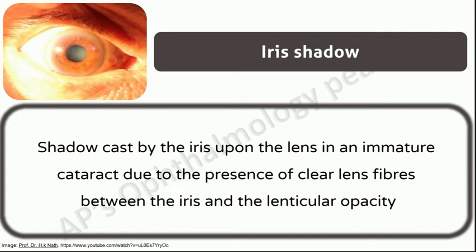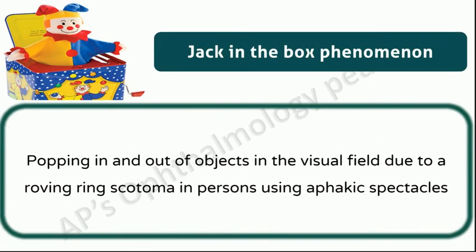Iris shadow: shadow cast by the iris upon the lens in an immature cataract, due to the presence of clear lens fibers between the iris and the lenticular opacity. It is crescentic in shape and is seen on the lens.